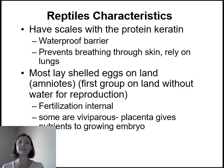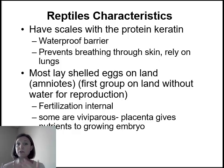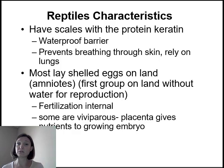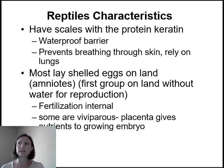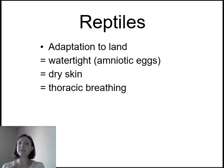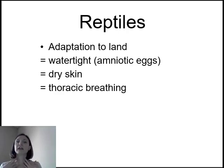Most reptiles are going to lay their amniotic eggs on land — they're the first group to do so, reproducing on land without water. Their fertilization is internal because they're reproducing away from water and no longer have that aquatic medium. Some reptiles are viviparous, meaning they retain the entire embryo inside and have some structure analogous to the placenta in mammals that provides nutrients to the growing embryo. Reptiles are adapted to land because they have watertight skin, amniotic eggs, and thoracic breathing — they can use their rib cage to expand their lungs rather than gulping air through their throat like amphibians.